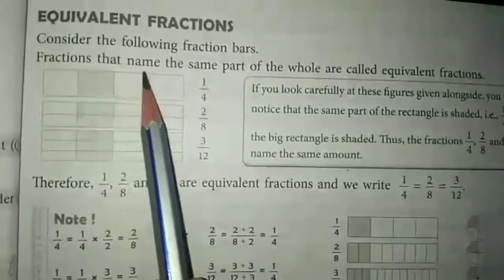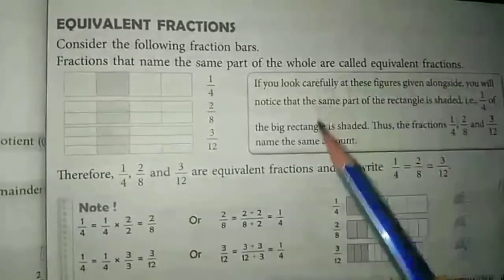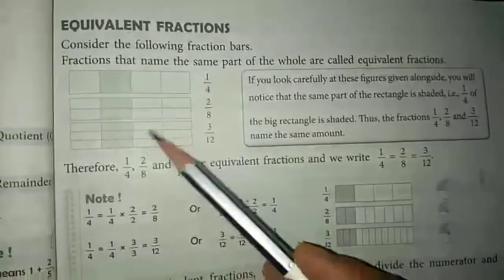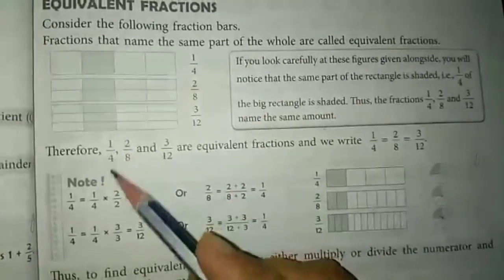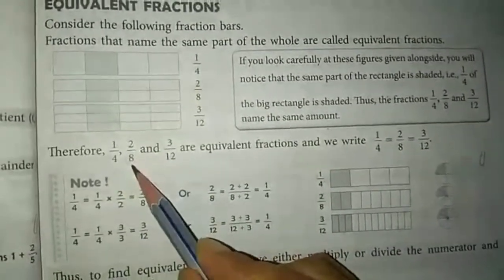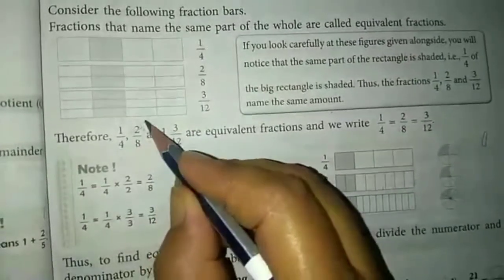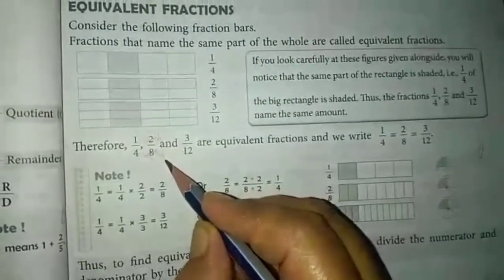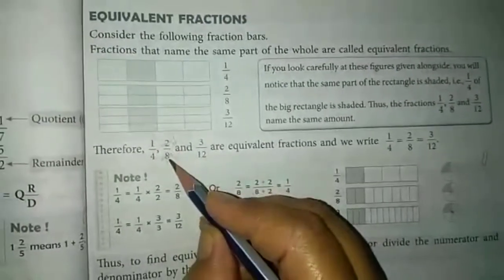Next topic is equivalent fractions. Fractions that name the same part of the whole are called equivalent fractions. Jaise aapka one upon four kis ke barabar hoga? Two upon eight — kyunki jab aap isko simplest form mein laoge toh aapka answer one upon four hi aayega. Two one ja two, two four ja eight. Toh two upon eight, one upon four ka equivalent fraction hai.